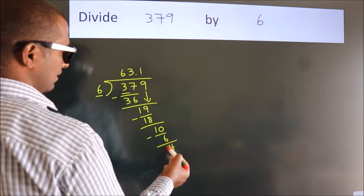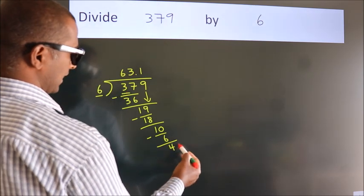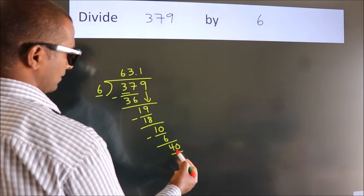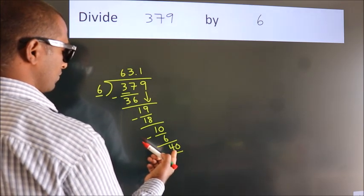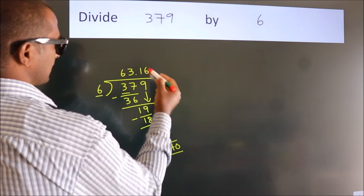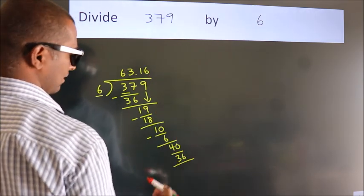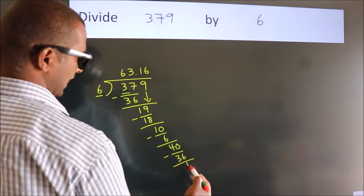After this, we already have the decimal. So directly take 0. So 40. A number close to 40 in the 6 table is 6 times 6, which is 36. Now we subtract. We get 4.